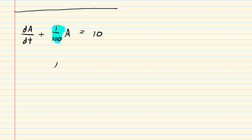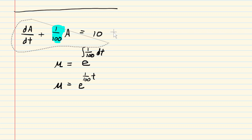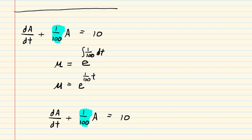To get the integrating factor, we look at the coefficient of A, which is one-hundredth. The integrating factor, sometimes symbolized by the Greek letter mu, equals E raised to the power of that coefficient integrated with respect to time. We integrate one-hundredth with respect to time to get one-hundredth T. This is our integrating factor, and we multiply both sides of the differential equation by it.